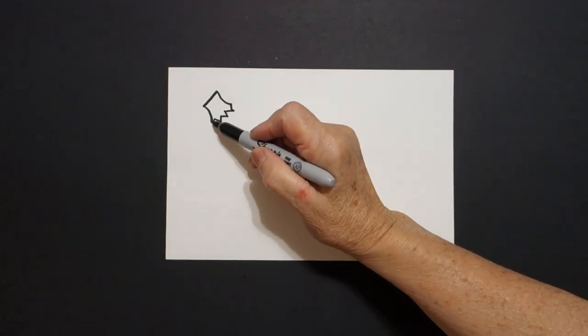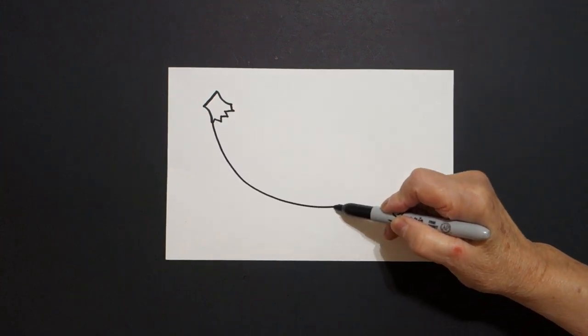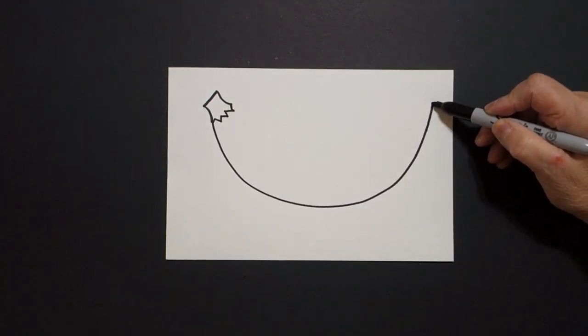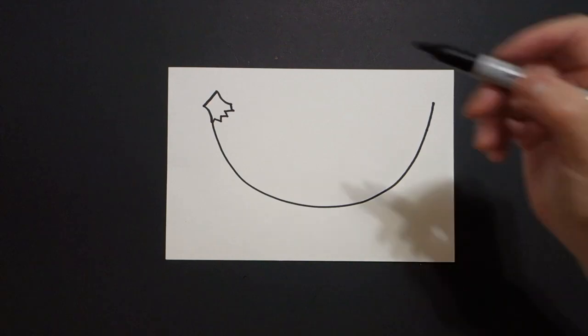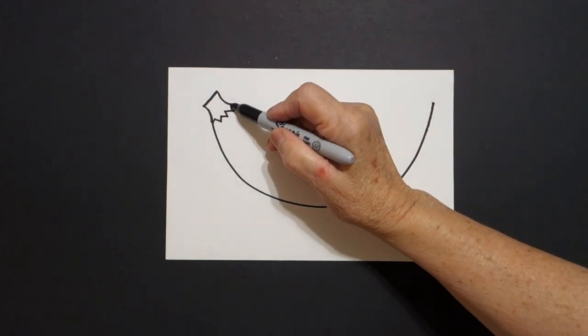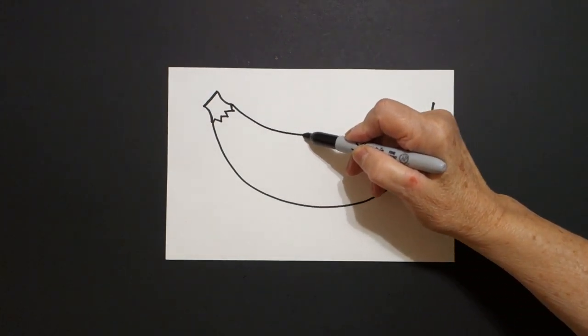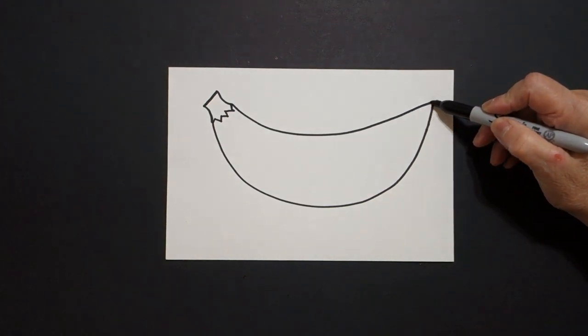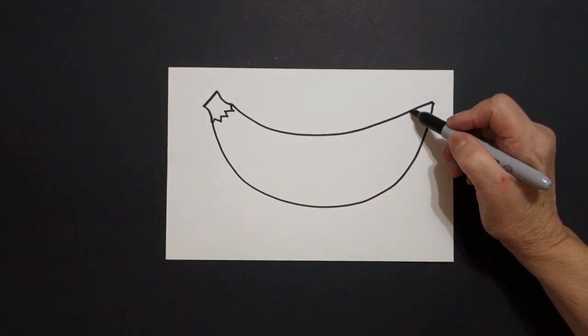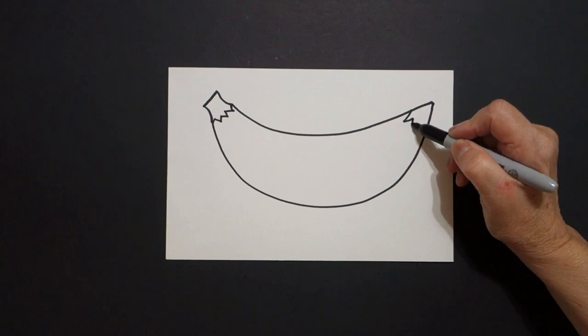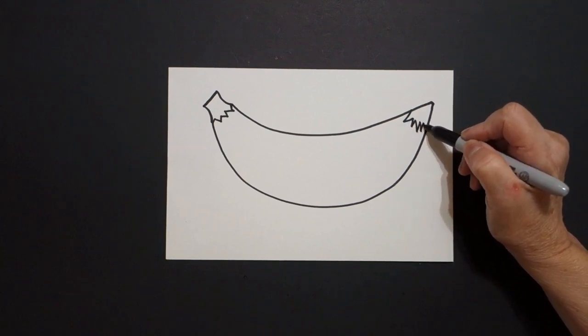Starting on the bottom, I'm going to draw a big curved line up, leave it floating, come back to this top part, draw another big curved line up. Right here at the end, I'm going to go zigzag, zigzag, zigzag, zigzag.